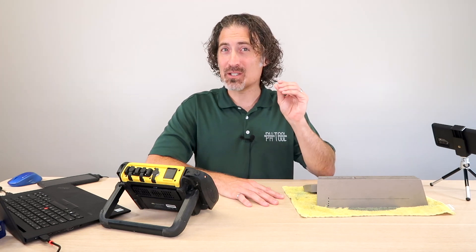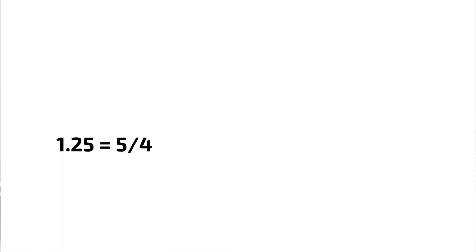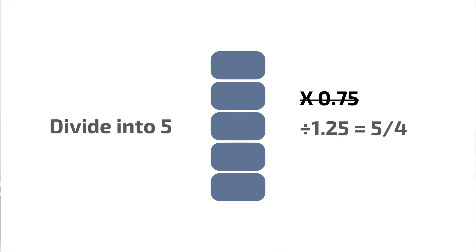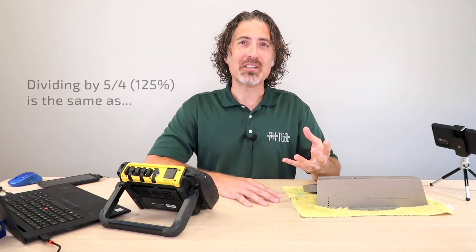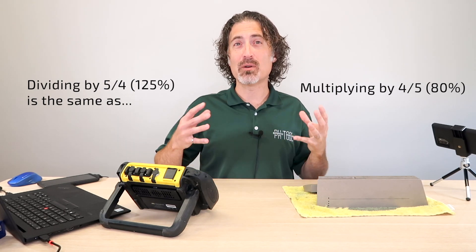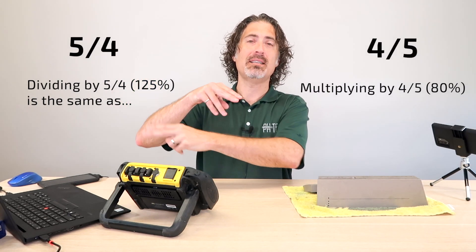Dividing by 1.25 only reduces a number by 20 percent. To understand this, we look at fractions: 1.25 is the same as 5 over 4, which takes your number, divides it into 4 equal parts, and adds a fifth one on top — representing an extra 25 percent. If you divide by 1.25 rather than multiply by 0.75, you're actually dividing by 5 over 4. When you divide by a fraction, this is the same as multiplying by the reciprocal — just an upside-down fraction.